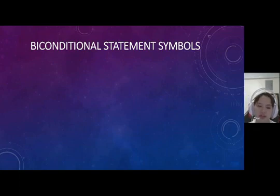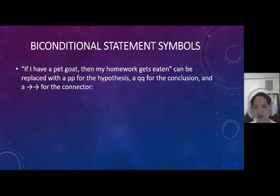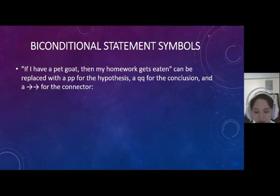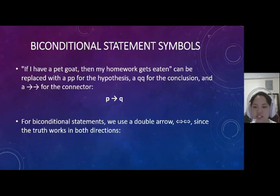Next are biconditional statement symbols. Logic symbols can replace words in statements. The conditional statement — if I have a pet goat, then my homework gets eaten — can be replaced with p for the hypothesis and q for the conclusion, with an arrow for the connector. For biconditional statements, we use a double arrow since the truth works in both directions.